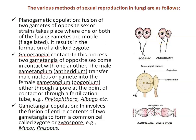The next method is gametangial contact. In this process, two gametangia of opposite sex come in contact with each other. The male gametangium is called the antheridium and the female gametangium is called the oogonium. The male gametangium transfers the male nucleus or gamete into the oogonium — the female gametangium — either through a pore at the point of contact or through a fertilization tube. This method is found in Phytophthora and Mucor.